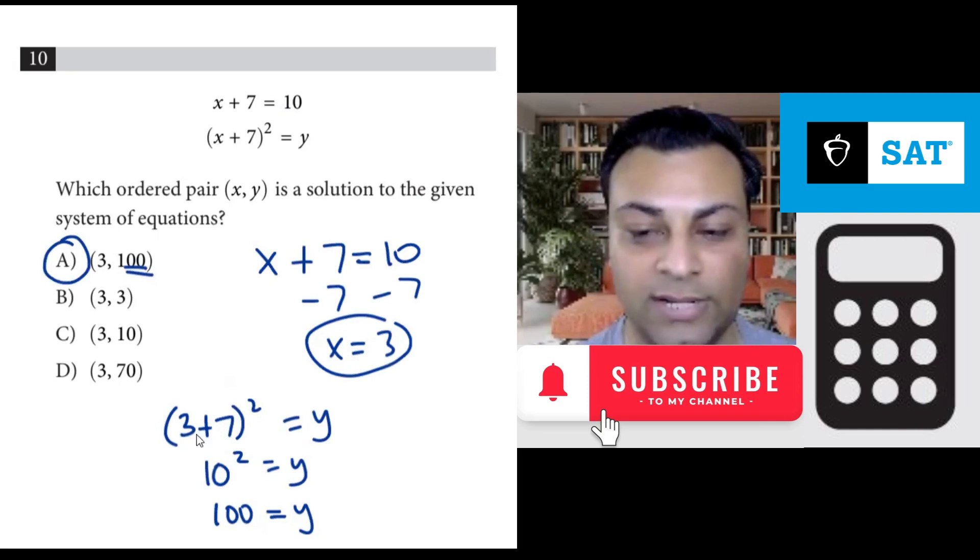The other way is to say I don't need to plug a 3 in. x plus 7 is known to be 10 by itself. The entire x plus 7 is already 10. The entire x plus 7 is 10, so you get 10 squared equals y. You just save a step, you end up here anyway. You still get y equals 100, so the answer is A.